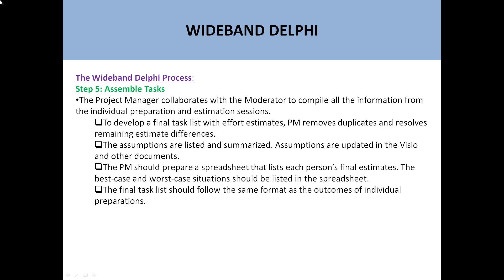Then comes the assembling of tasks. The project manager collaborates with the moderator to compile all information from individual preparation and the estimation session to develop a final task list with effort estimates. The PM removes duplicates and resolves remaining estimate differences. Assumptions are listed and summarized. The PM prepares a spreadsheet — like an Excel sheet — listing each person's final estimates, with best case and worst case situations. The project manager assembles all the tasks into one sheet to get an overall estimate for each task.